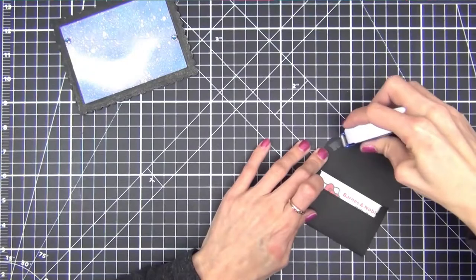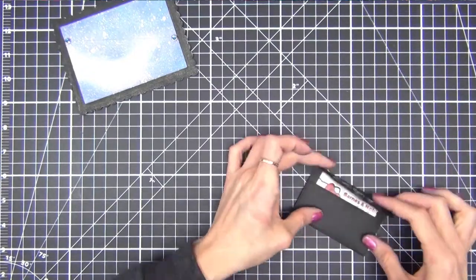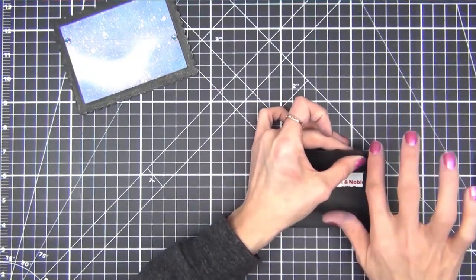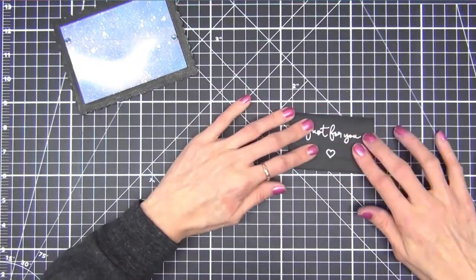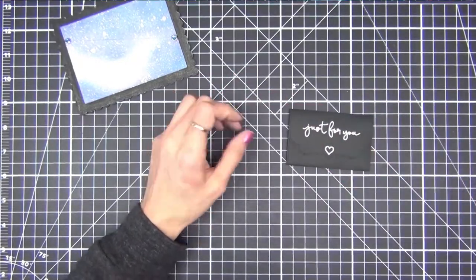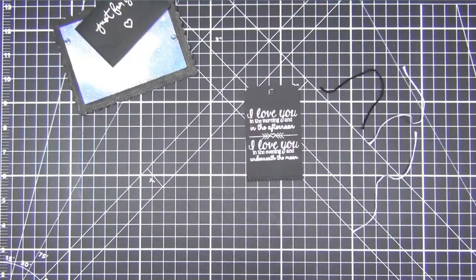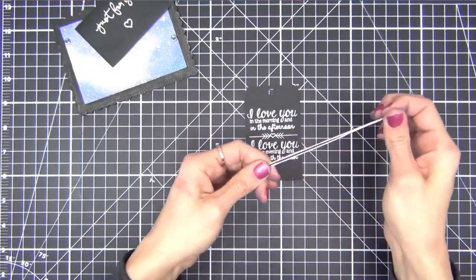Here I am stuffing the little envelope from earlier with a Barnes & Noble gift card because this is for my daughter for Valentine's Day and she loves to read. To seal it I just use a tape runner but pretty much any kind of adhesive will work here.